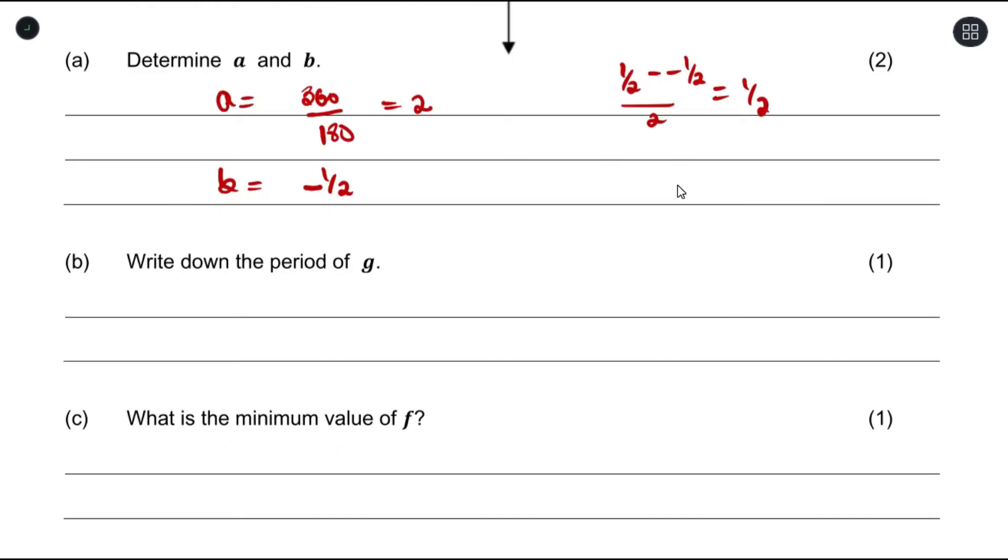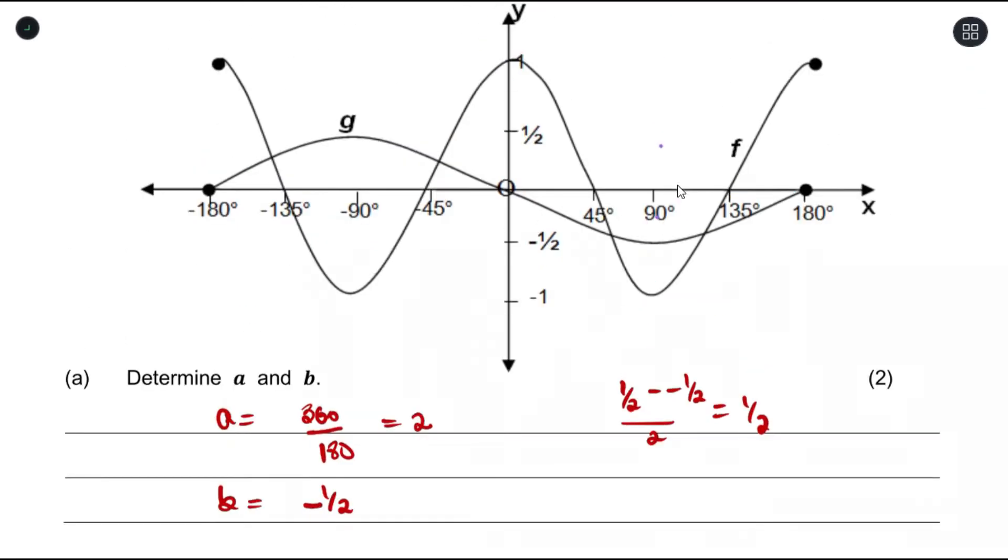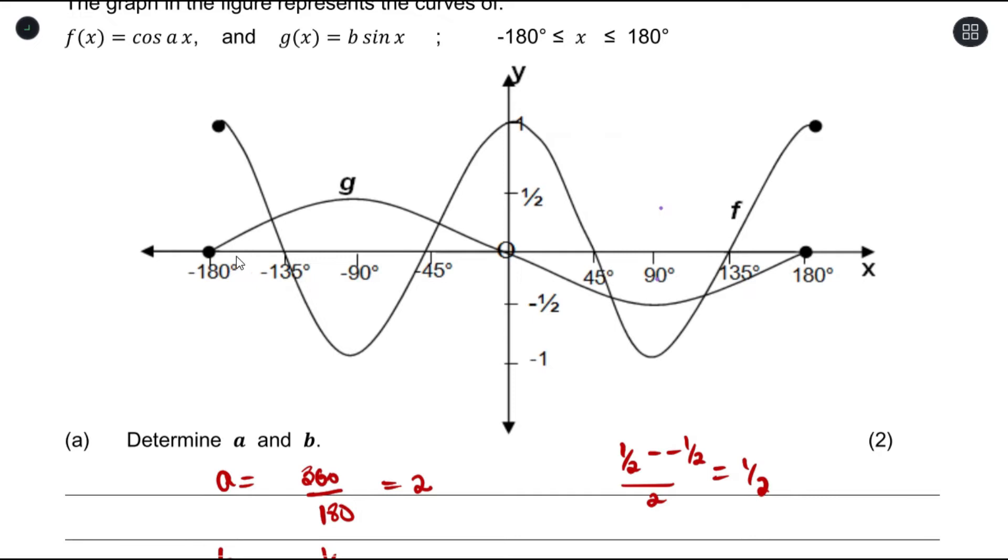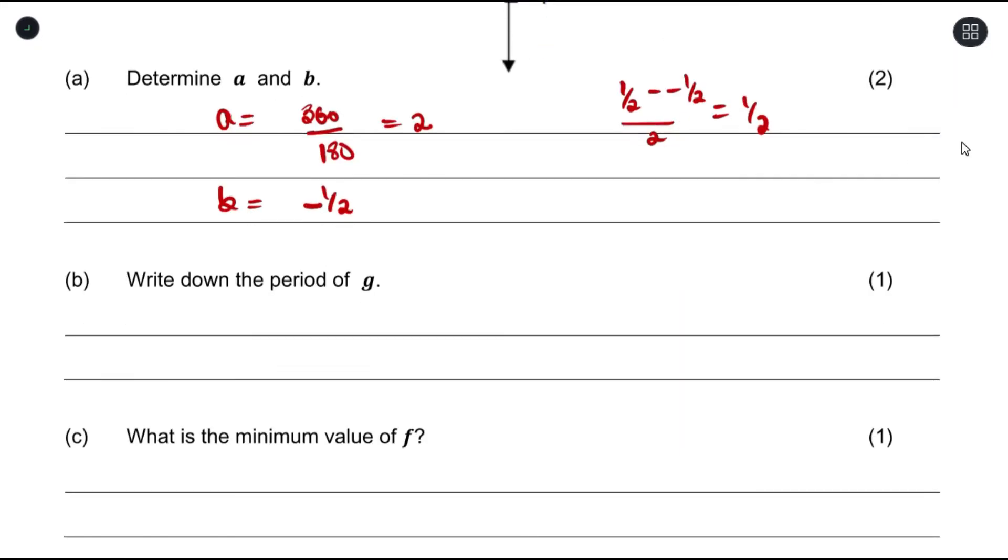For part (b), write down the period of g. Now g is our sine graph and we can see that it completes a full cycle in 360 degrees. So the answer is 360 degrees.